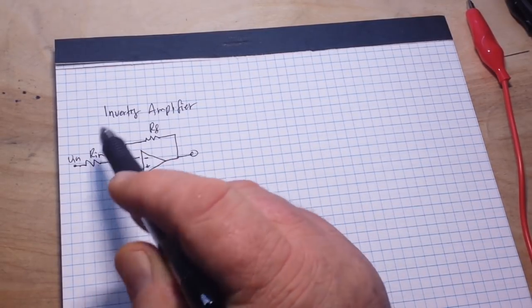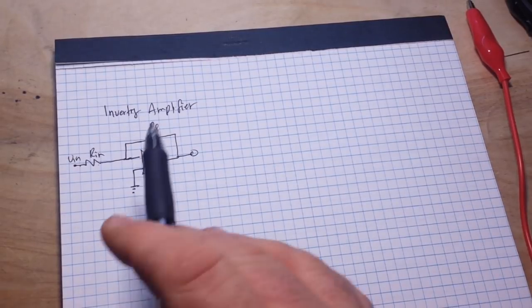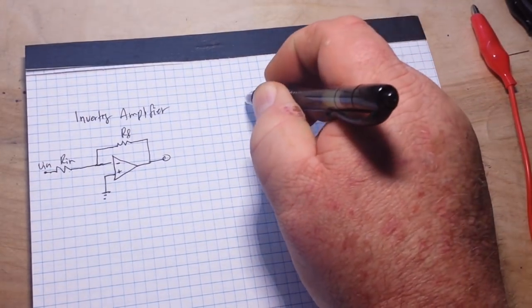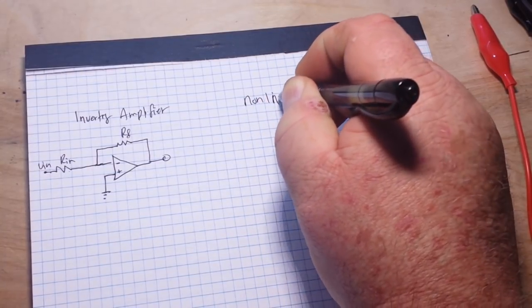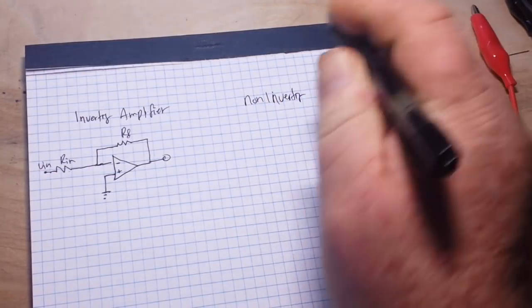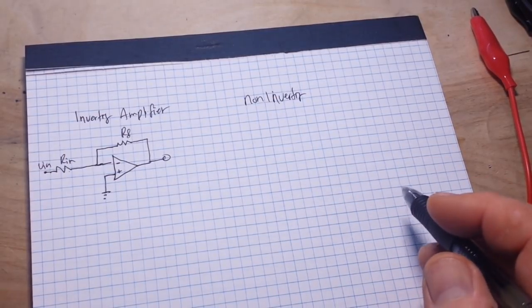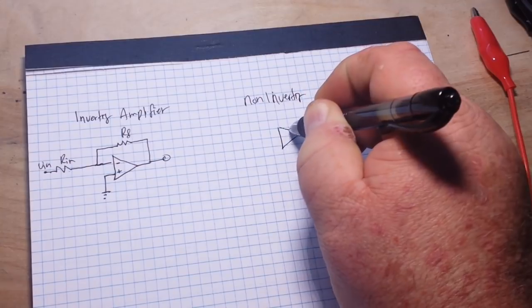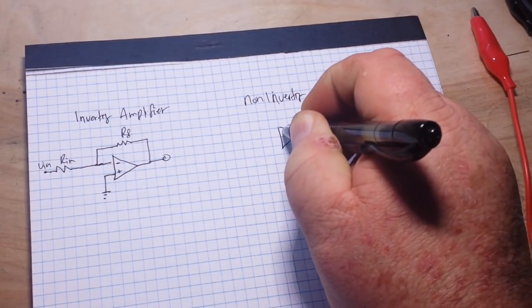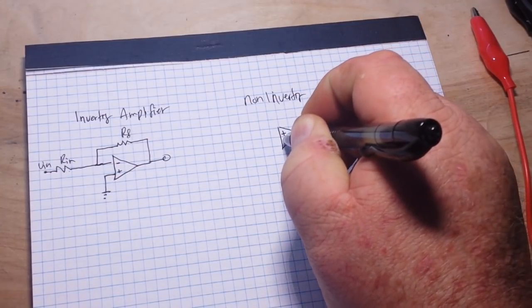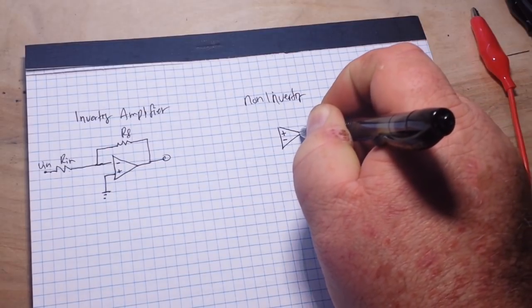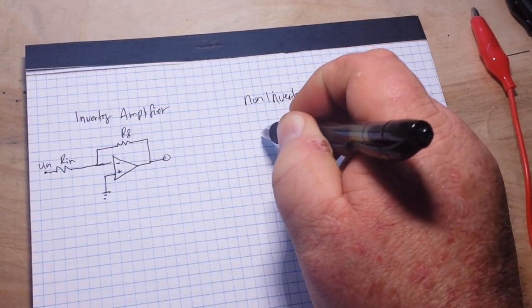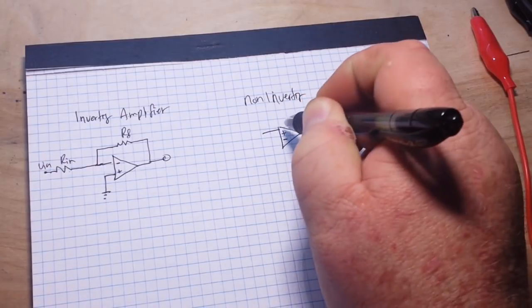Now we also have the non-inverting mode, and it looks pretty similar. We'll start with our op-amp. In this case, we're going to put our non-inverting input on top, our inverting input on the bottom, and our VN in this case comes directly to the non-inverting input.